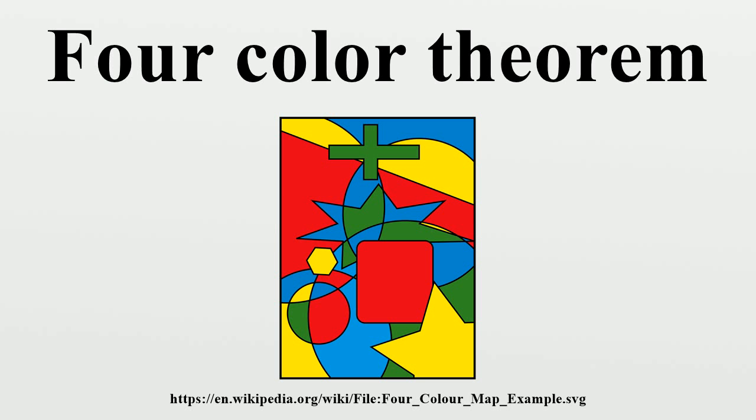The four-color theorem was proven in 1976 by Kenneth Appel and Wolfgang Haken. It was the first major theorem to be proved using a computer. Appel and Haken's approach started by showing that there is a particular set of 1,936 maps,